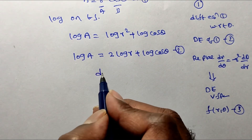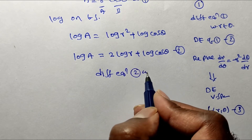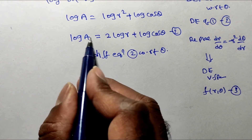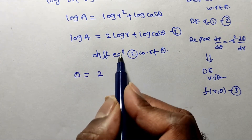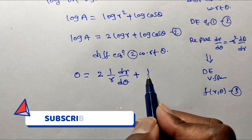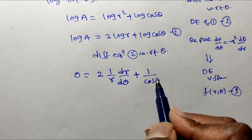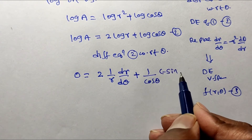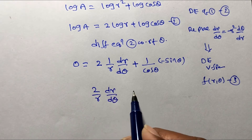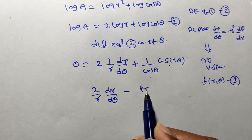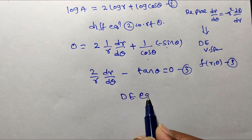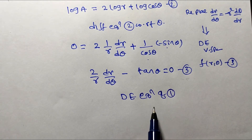Differentiate equation two with respect to θ. Since log a is a constant, its derivative is 0. So: 0 = 2 · (1/r) · dr/dθ + (1/cos θ) · (−sin θ). Simplifying: 2/r · dr/dθ − sin θ/cos θ = 0, which gives 2/r · dr/dθ − tan θ = 0. This is equation number three — the differential equation of the given curve.